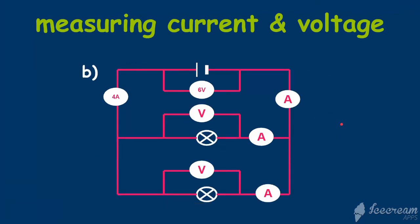Here we have the second situation, the second problem, where we have the same battery. Now we have equal lamps. We know that the battery gives 6 volts to the circuit. We have the reading of this ammeter, and we have to find the value of the voltmeter here, the voltmeter here, the ammeter here, the ammeter here.